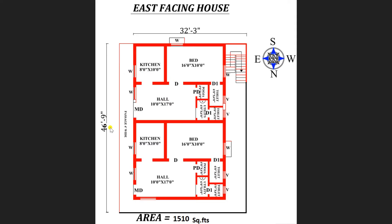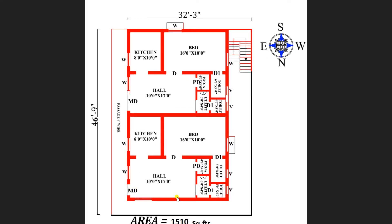Now let us move towards the second portion. This is the main entrance of the second unit. The hall dimension is also the same — 10 feet by 17 feet. On the left hand side you can view the kitchen of 8 feet by 10 feet. Returning back to the hall.